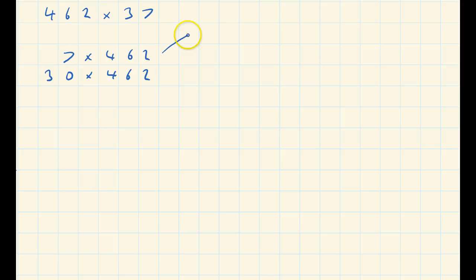So first off, I'm going to do 7 lots of 462 using the column method. I have 462 and I'm going to times it by 7. I'll explain what's going to happen just in case you don't know how to do this. The first thing I'm going to do is 7 times 2. 7 times 2 is 14, so I put down 4 and carry 1. I've done 7 times 2.